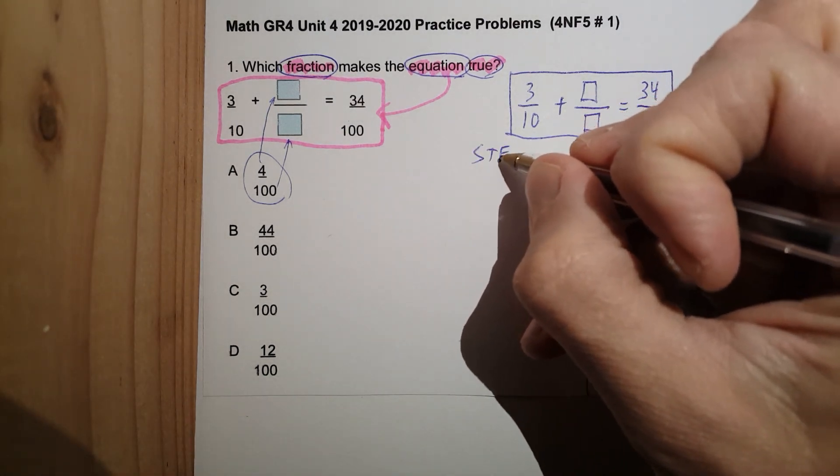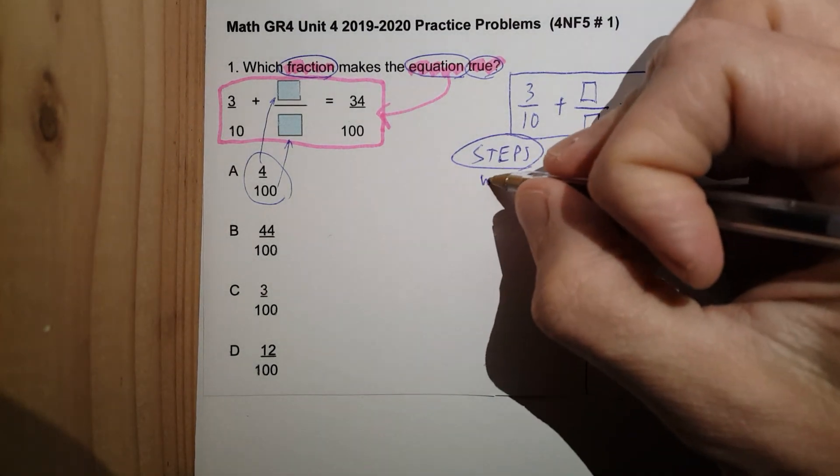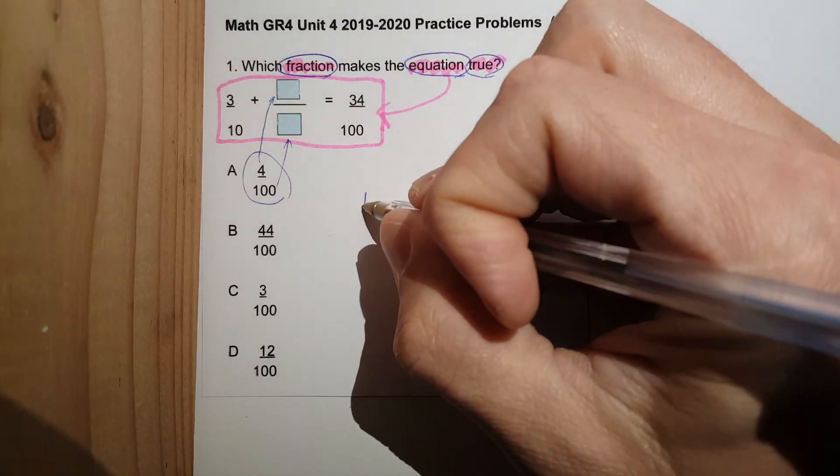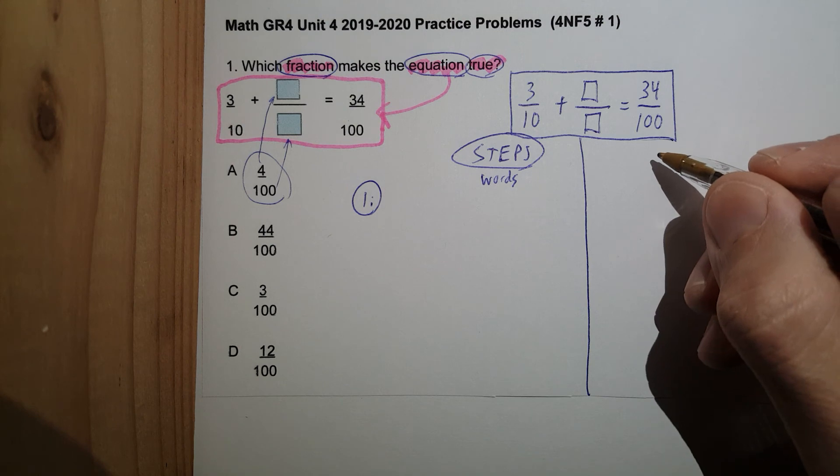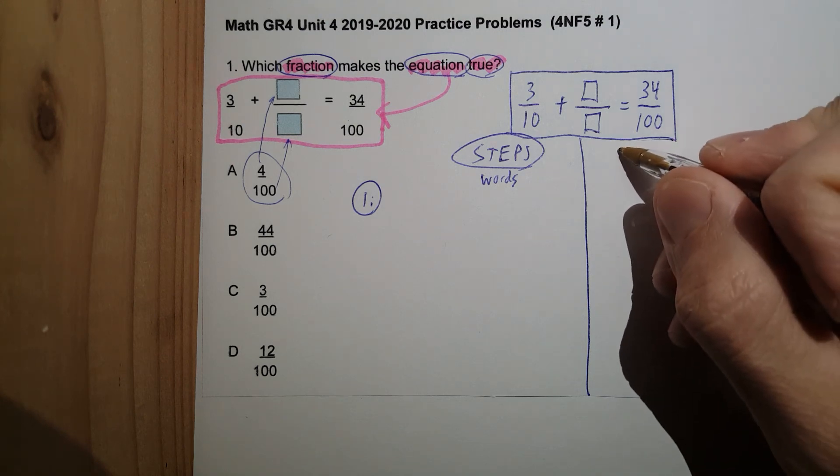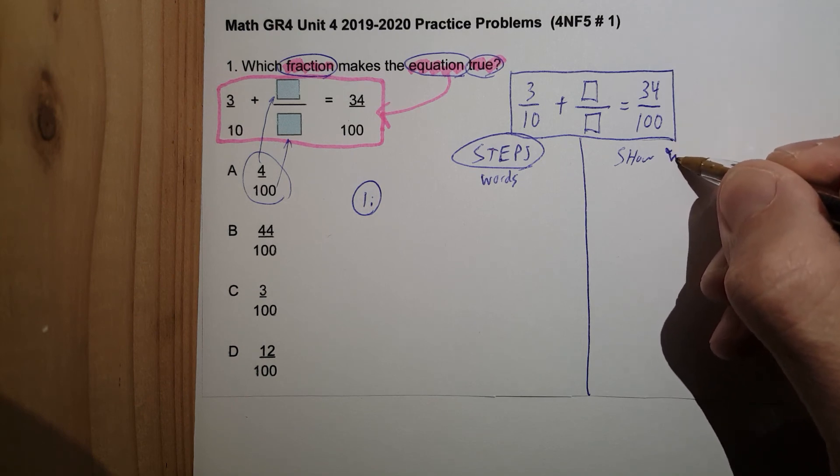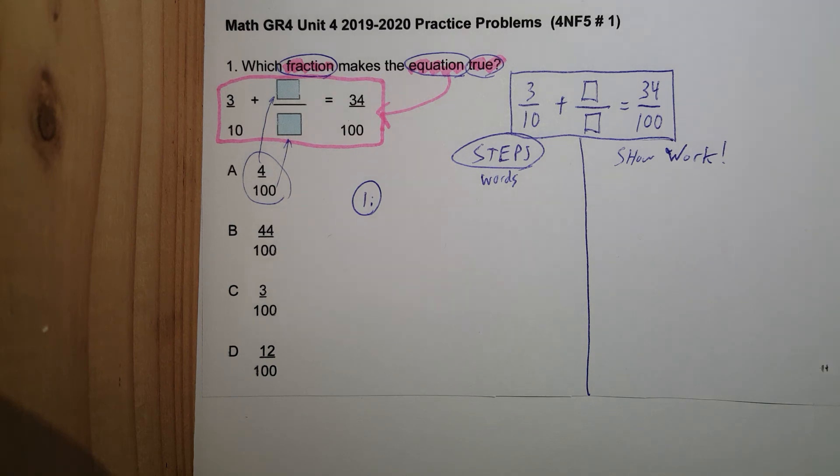On the left side, we are going to do the steps in words. Step number one. On the right side, we will show, there we go, show work.